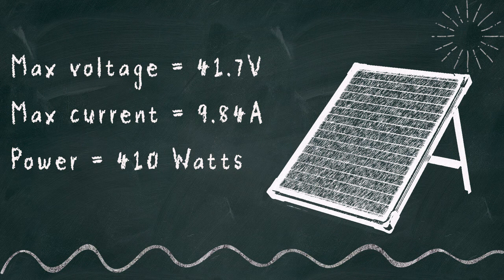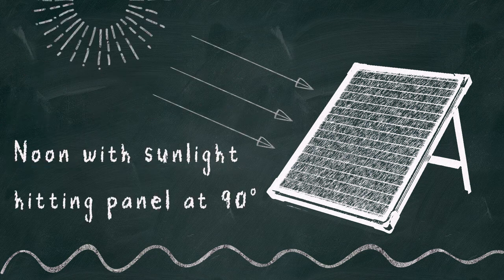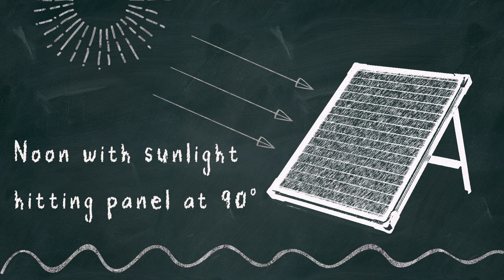All solar panels, in addition to watts, have a maximum voltage and a maximum current rating. Those two numbers, when multiplied, should equal the panel's wattage. Notice the term maximum voltage and maximum current. That number is set when the panel is tested under ideal conditions. Basically, it would be the watts produced at noon on the summer solstice with a panel oriented at a 90 degree angle to the sun.